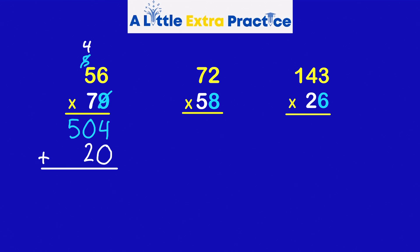7 times 5 is 35. Plus 4 is 39. My partial products are 504, 3,920. So I'll add those two.